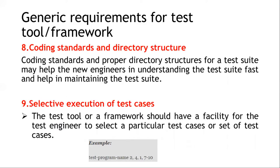The next requirement is selective execution of test cases. The test tool or framework should have the facility of executing test cases based on selection. For example, given a test program name with selection '2,4,1,7-10': test case 2 is executed, then test case 4, then test case 1, then a hyphen specifies a range — test cases 7 through 10 will be executed in sequential manner.